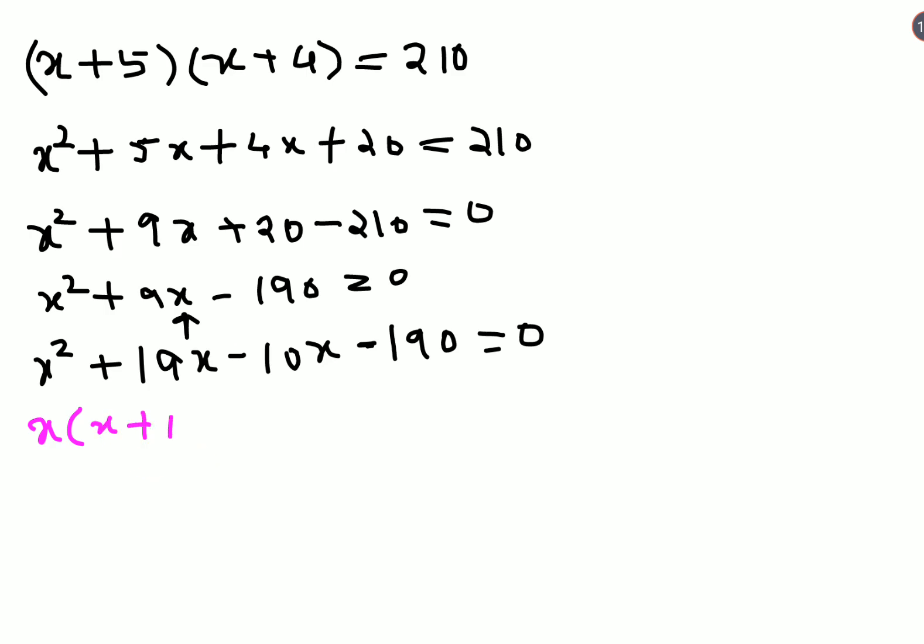Now let's take common. We have (x+19). Here we will take 10 common, so we are left with (x+19). Let's take the entire bracket common (x+19). I am left with (x-10) equals to 0.